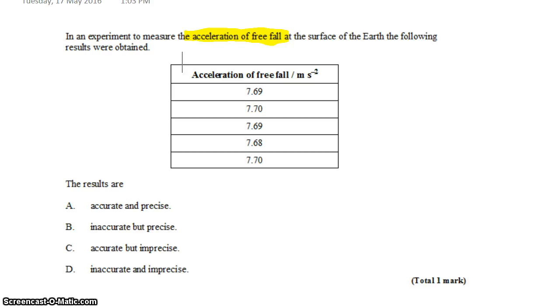What we know to be the real value for the acceleration due to gravity is about 9.81 on the surface of the earth. And so we see that all of these values are all well below that value, 9.81. And so that's telling us that this is not accurate.